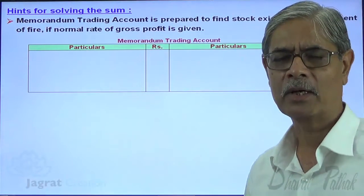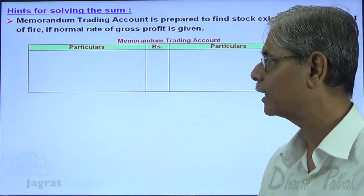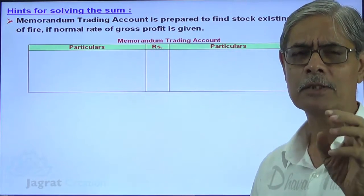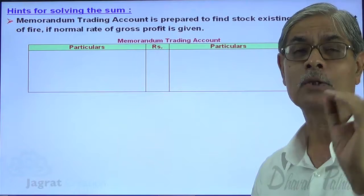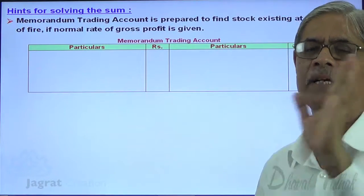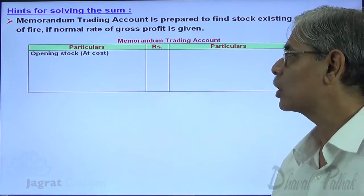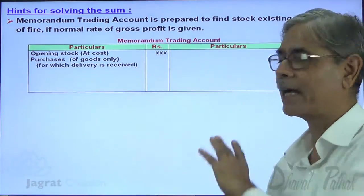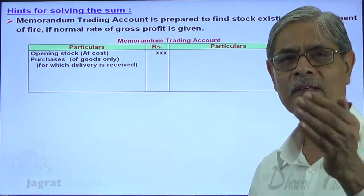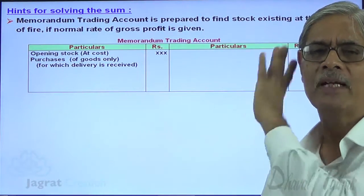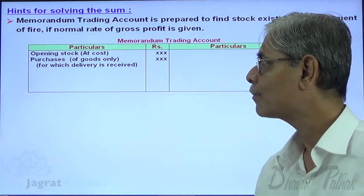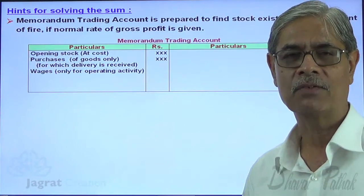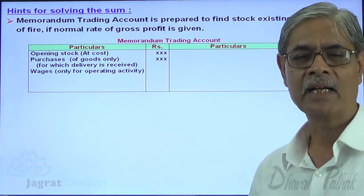This Memorandum Trading Account is prepared till the date of fire. Another important point: it is to be prepared at cost, and only for goods and for operating activity. So opening stock is to be recorded at cost. Purchases of goods only are recorded — specifically goods for which delivery has been received. Wages are recorded for operating activities only: carriage inward, material handling charges, etc.